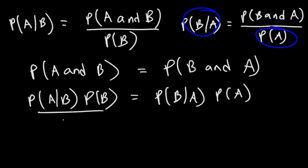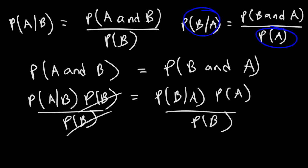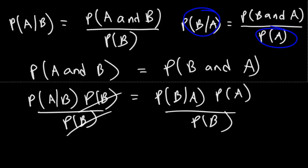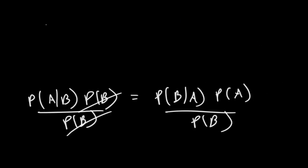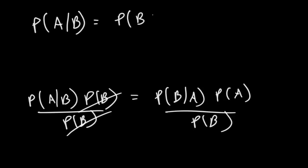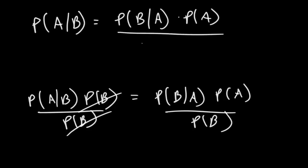Now what I'm going to do is divide both sides by the probability that event B will occur. And this is going to give me the formula associated with Bayes' Theorem. So the probability that A will occur given that B has already occurred is equal to the probability that B will occur given that A has occurred, times the probability of event A occurring, divided by the probability that event B will occur.